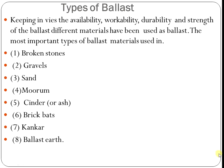The next important point is the types of ballast. Keeping in view the availability, workability, durability, and strength of the ballast, different materials have been used. The most important types of ballast materials used are: first, broken stone; second, gravels; third, sand; fourth, murum; fifth, cinder or ash; sixth, brick ballast; seventh, conker; and eighth, ballast earth.